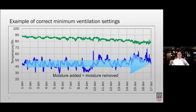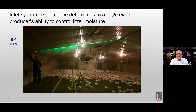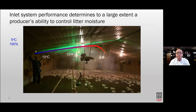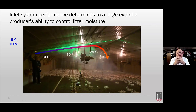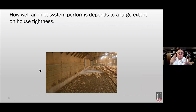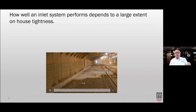When we look at factors affecting accuracy — house tightness, stratification, inlet performance, air movement — all are related to ventilation. The app gives an estimate, but how accurate our moisture control is depends largely on how well our inlet system is working. The better the system, the more we can dry incoming air and pull moisture from litter. How well an inlet system works depends greatly on house tightness: if all air enters through floor cracks rather than inlets, it will not dry litter. It's the quality of air brought in as much as the quantity.